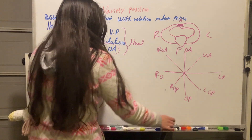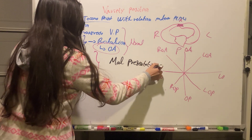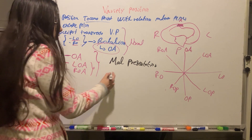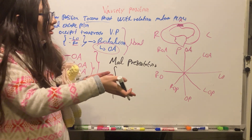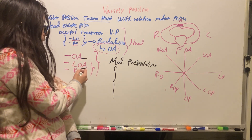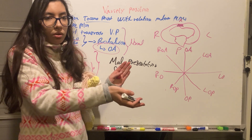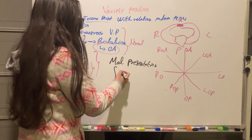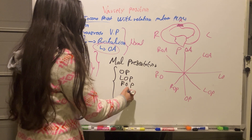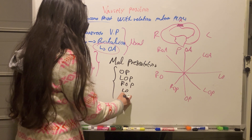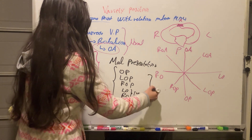What is called a malpresentation, or abnormal presentation, is whatever is not an anterior variety of position. Normal or deliverable varieties are occiput anterior, left occiput anterior, and right occiput anterior. Any posterior or transverse variation is a malpresentation — occiput posterior, left occiput posterior, right occiput posterior, left occiput, or right occiput transverse are all abnormal presentations.